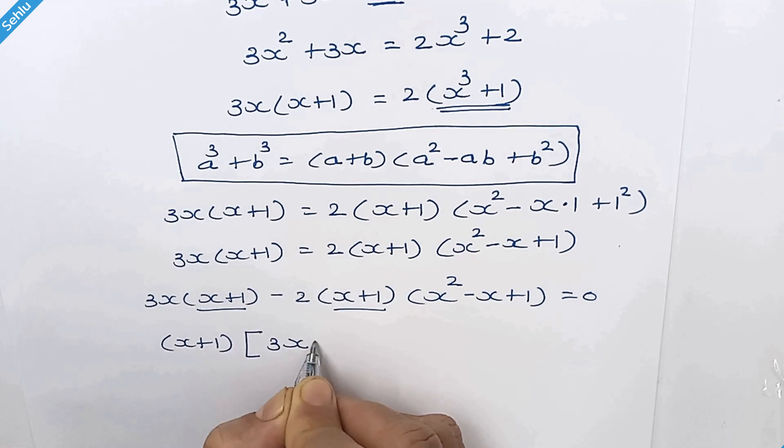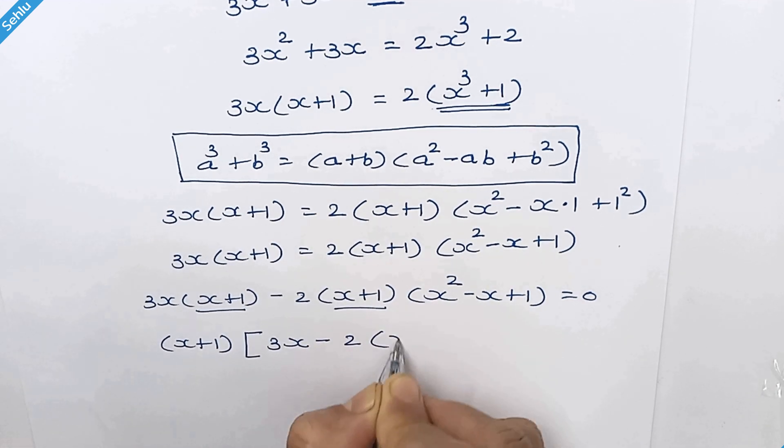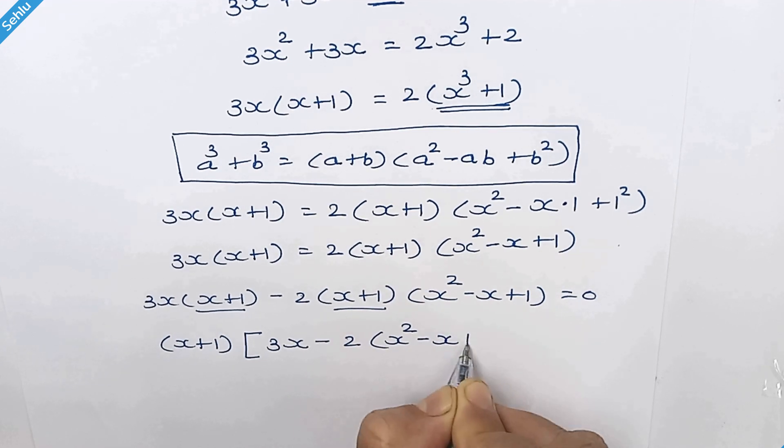So we have 3x minus 2 times x square minus x plus 1.